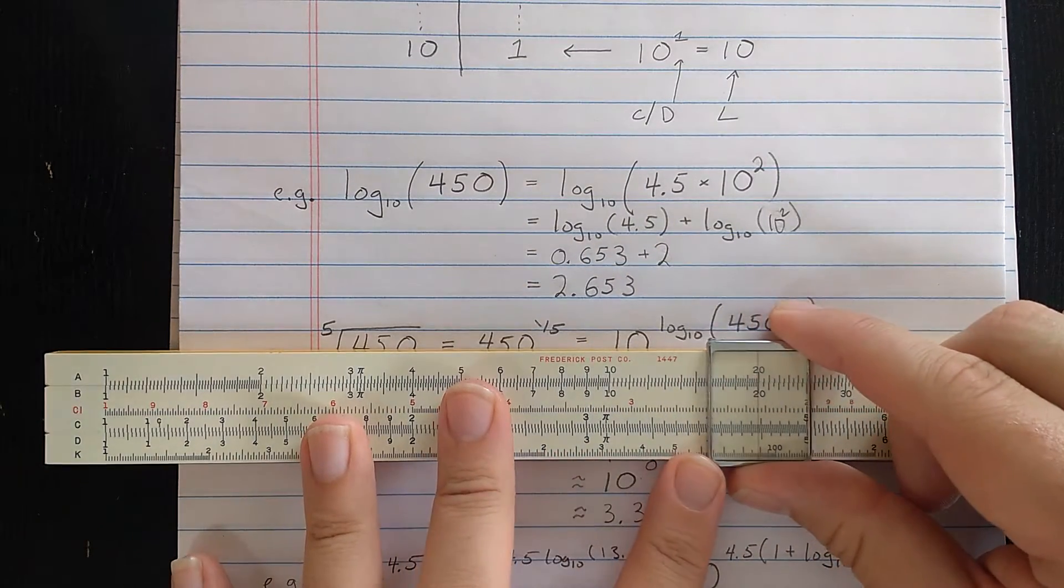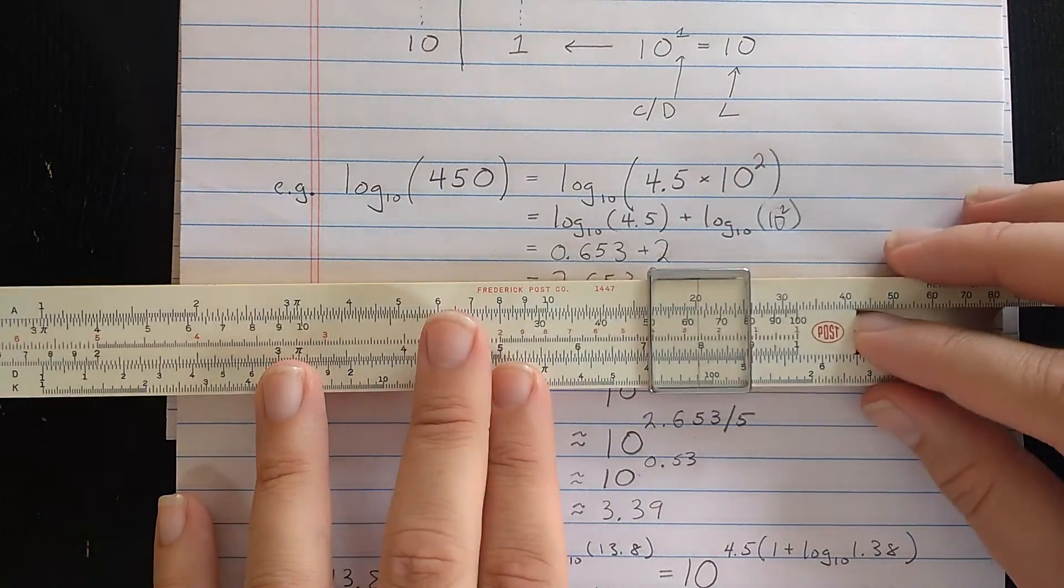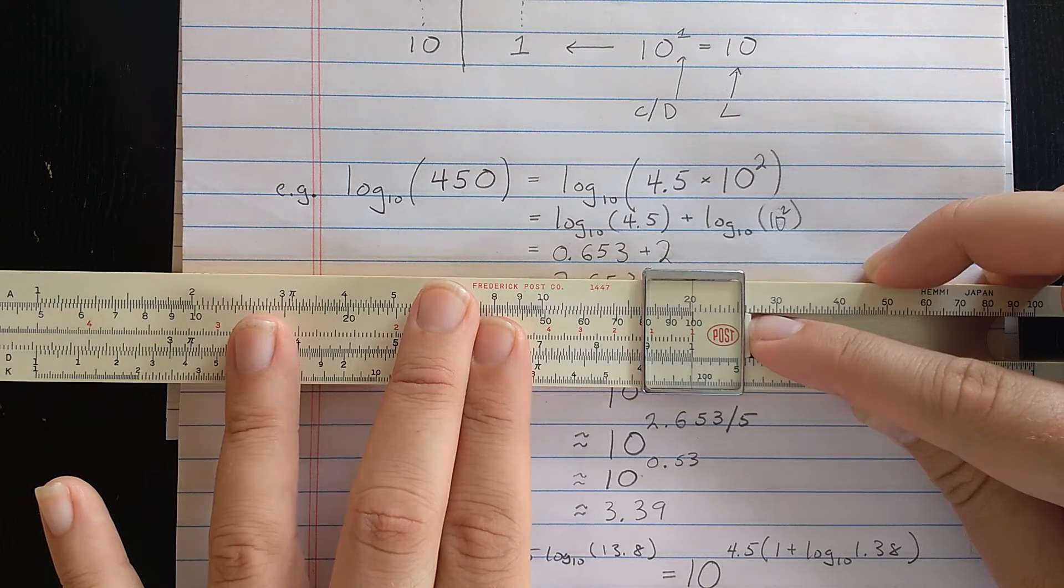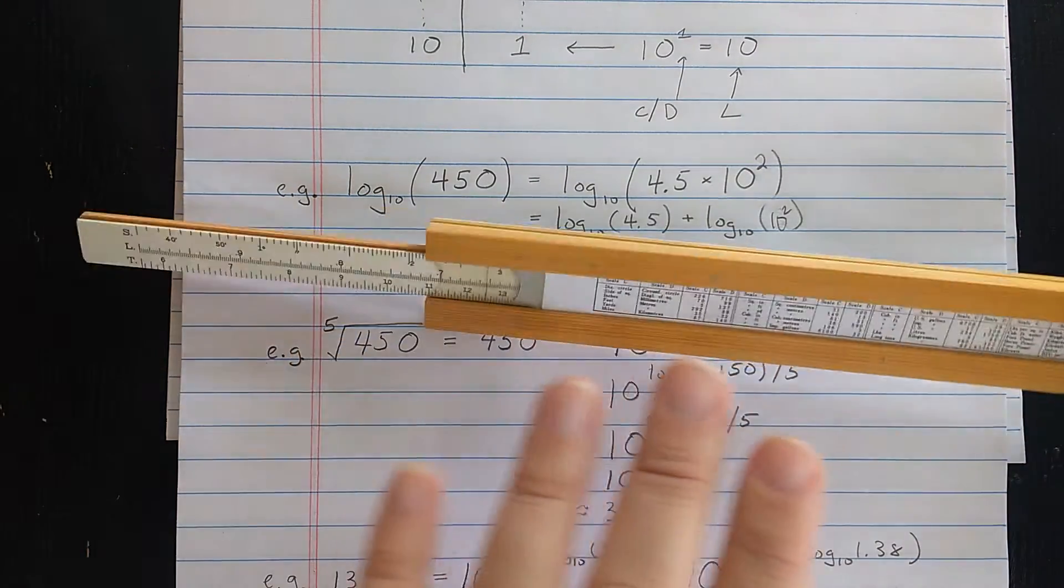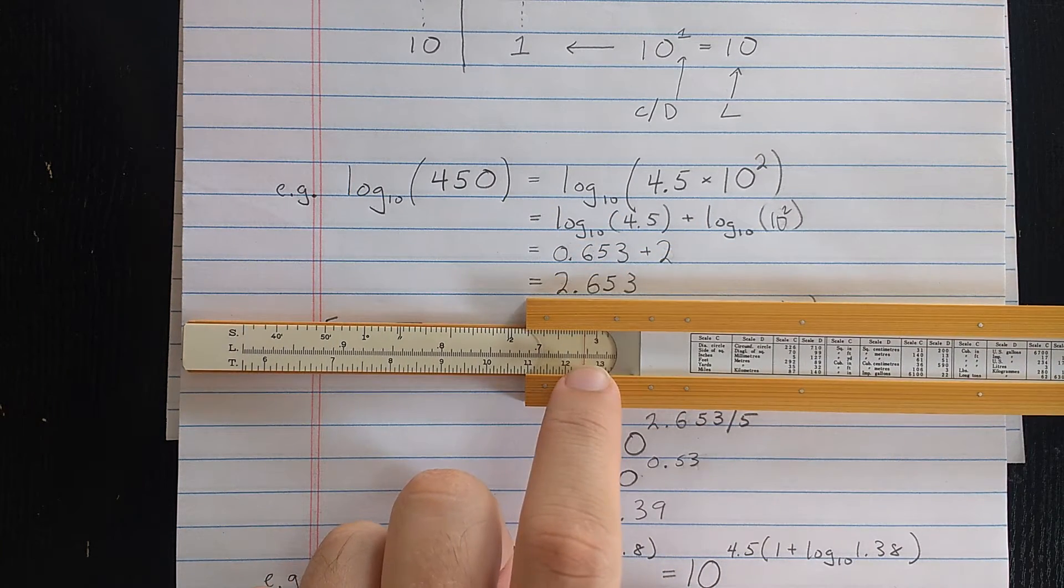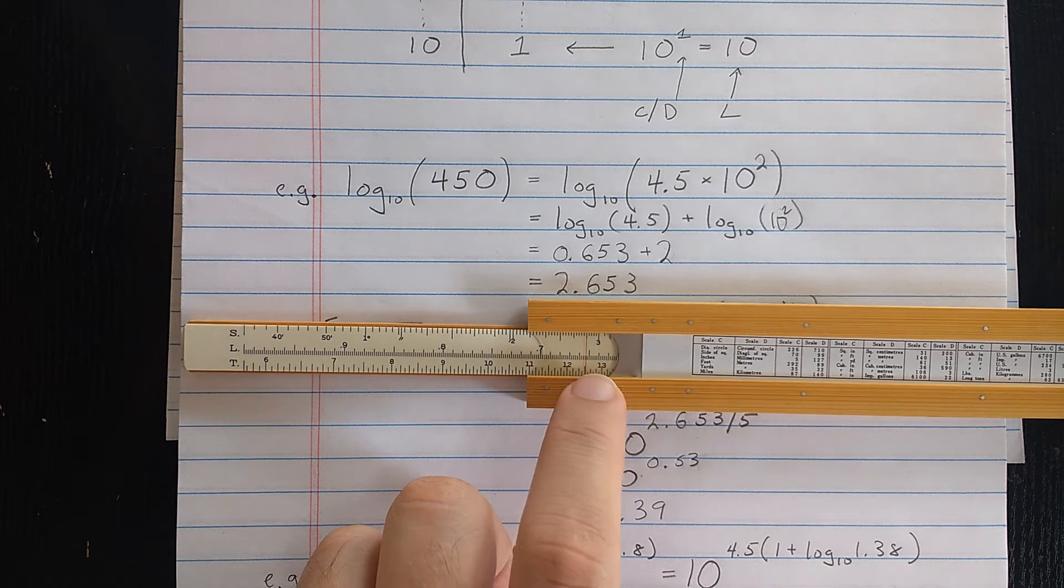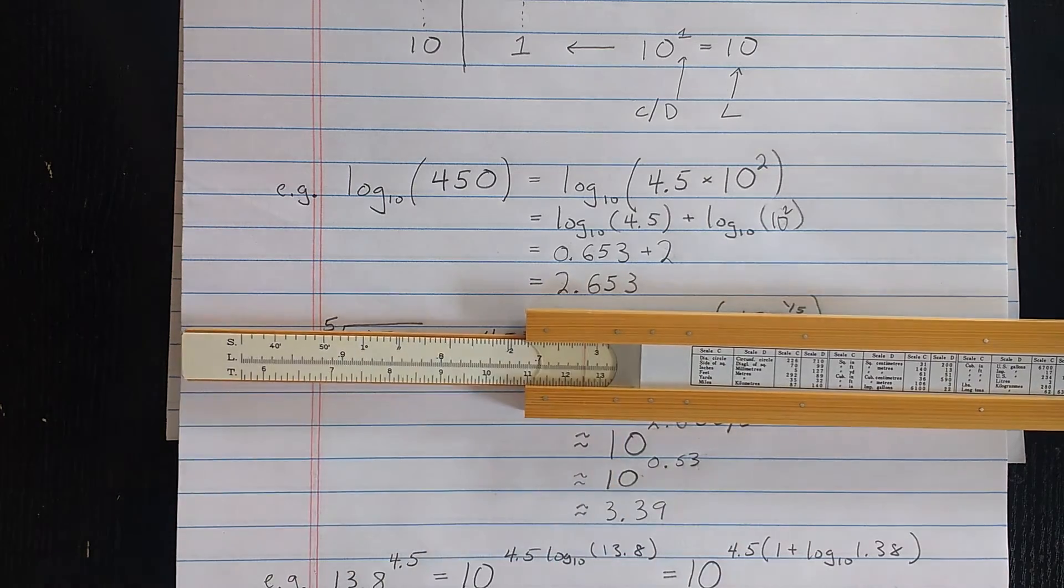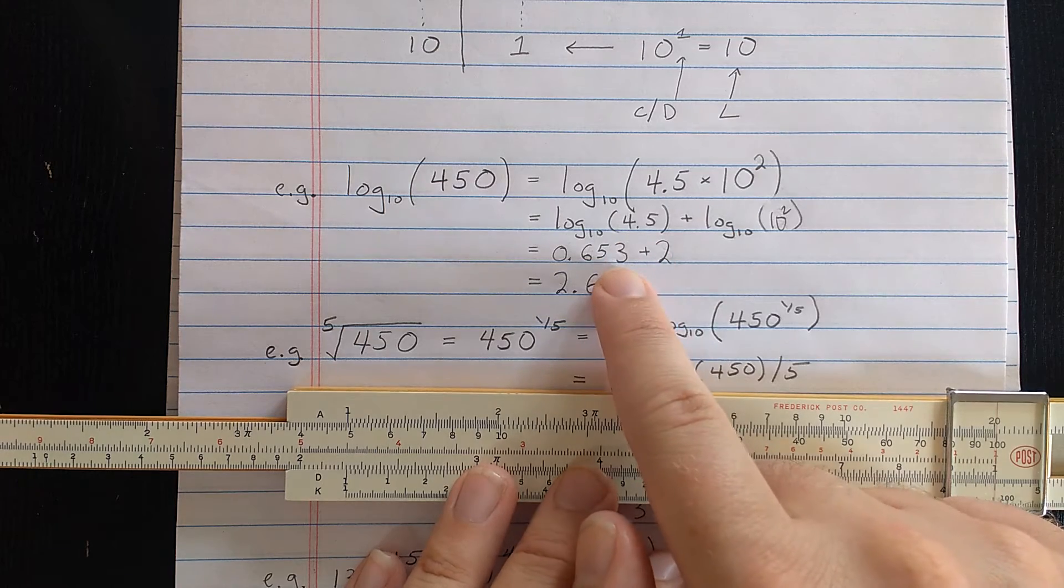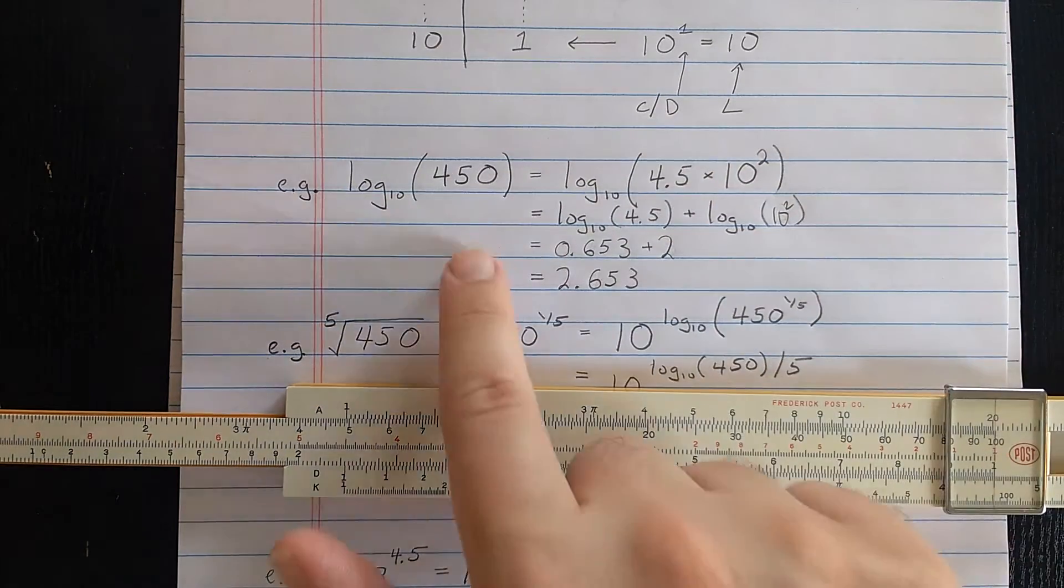So let's do it here. If I find 4.5 on the D scale, then I'm going to move the index to the cursor. Then underneath the window here on the middle scale, which is L, I'll look up the result. That's 6.5. So 6.5 and it's between 2 and 4. So let's go with 0.653. So adding together that integer part plus the fractional part, which is called the mantissa, I get 2.653.